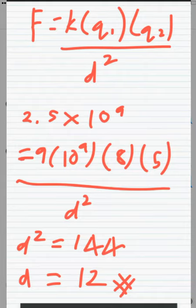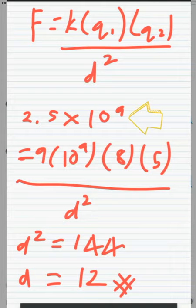Use the formula F equals k times q1 times q2 divided by d squared. So the force is 2.5 times 10 to the power of 9 equals 9 times 10 to the power of 9, which is the k constant, times 8 q1 times 5 q2 divided by d squared.